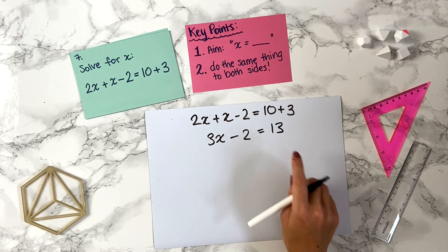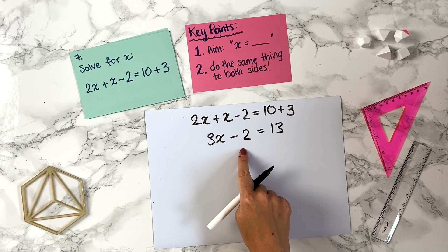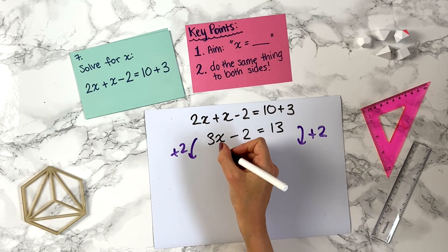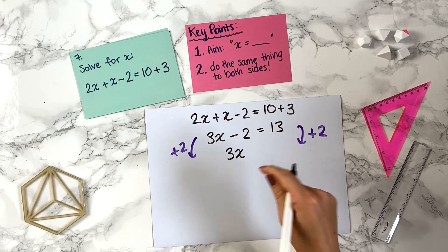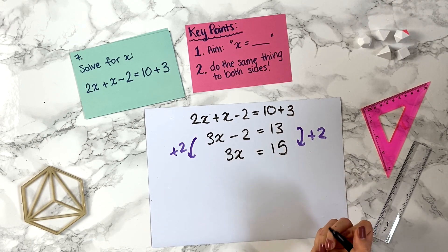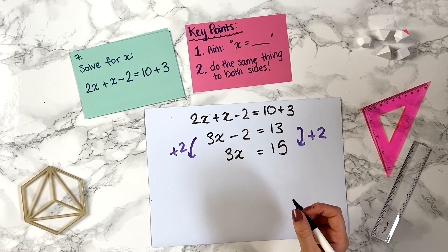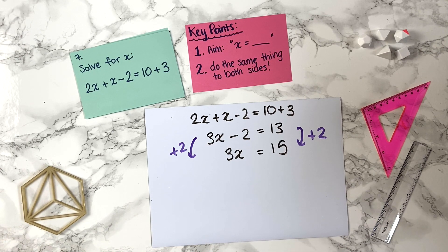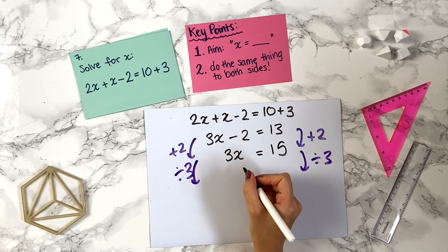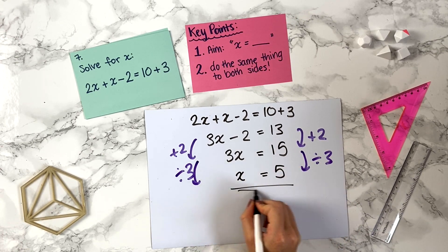Now we have x's on the left and want numbers on the right. We need to get rid of minus 2, so we add 2 to both sides. Minus 2 plus 2 cancels, leaving 3x. On the right, 13 plus 2 is 15. So 3x equals 15. To get x on its own, we divide both sides by 3: 3x divided by 3 is x, and 15 divided by 3 is 5. So x equals 5.